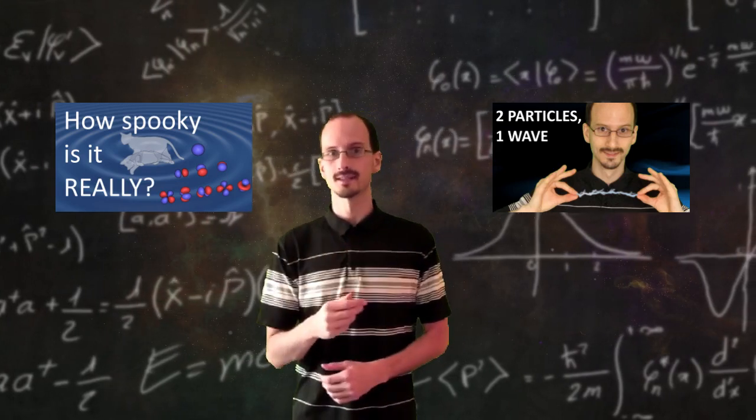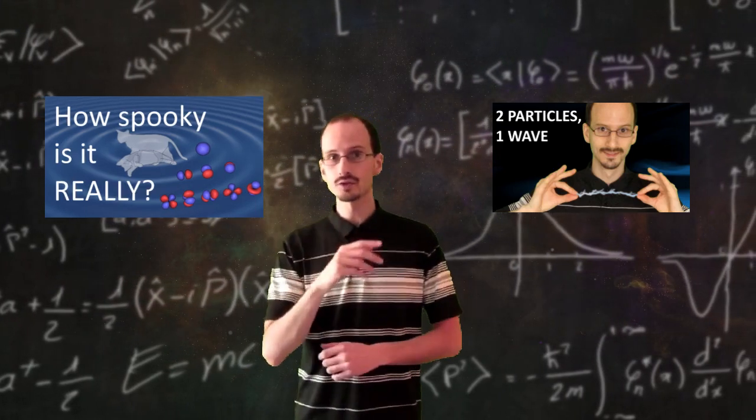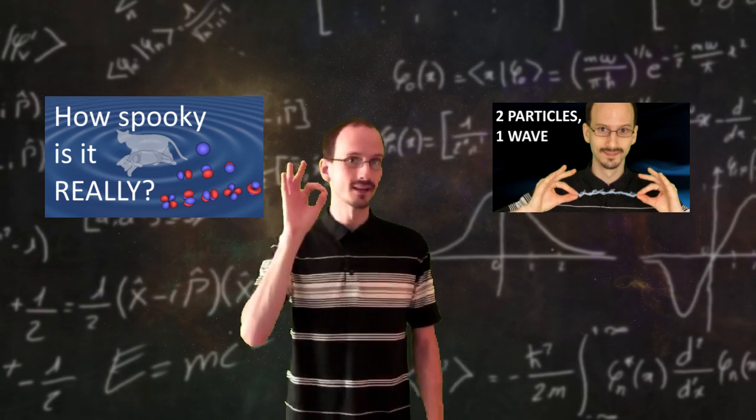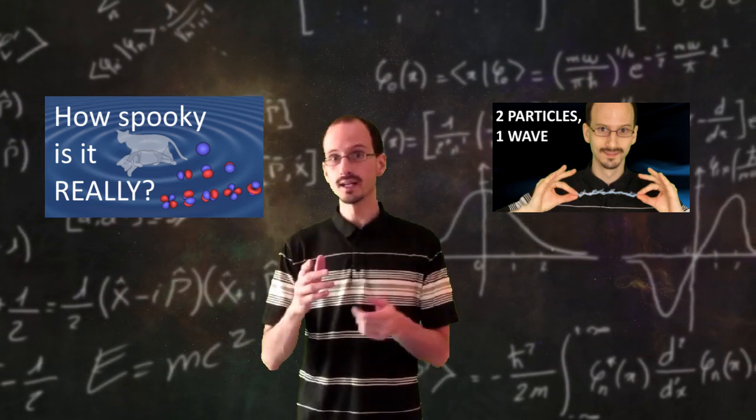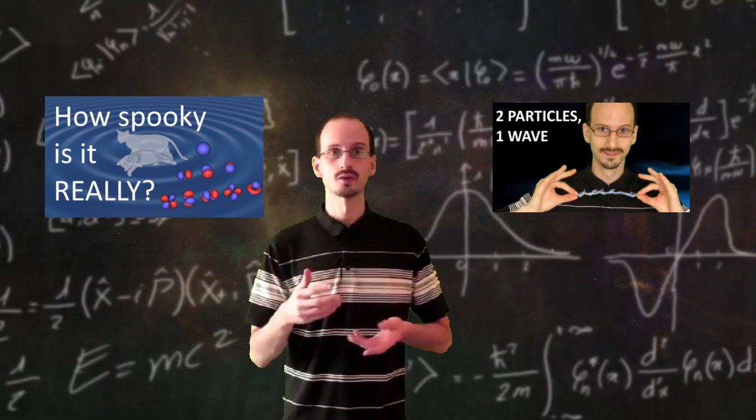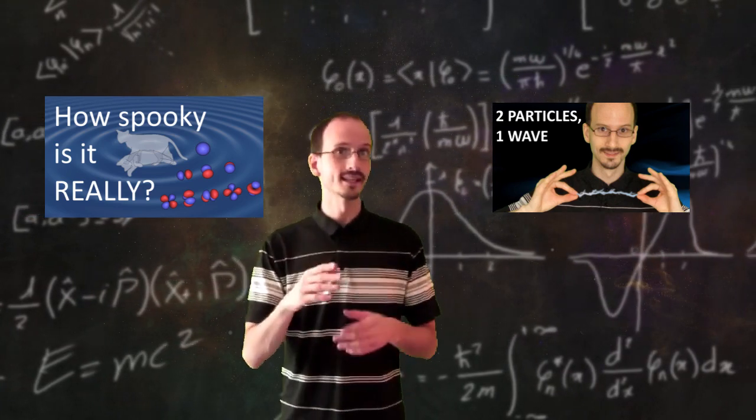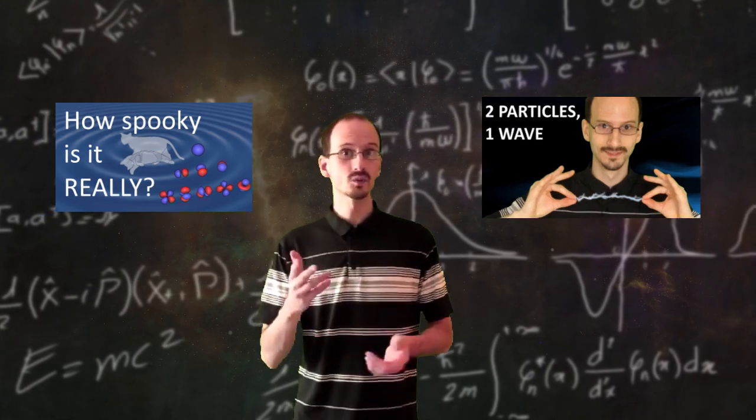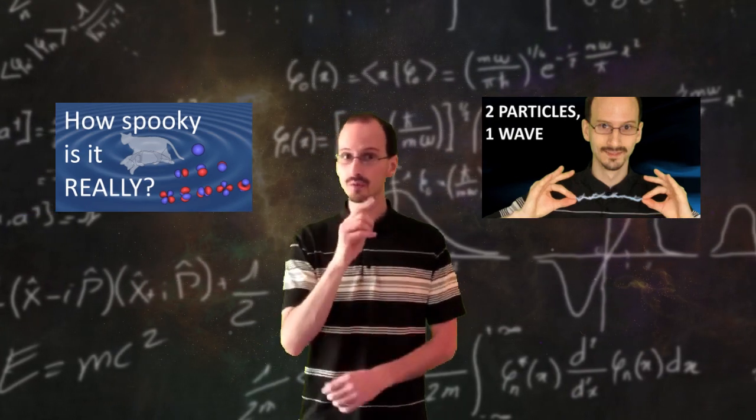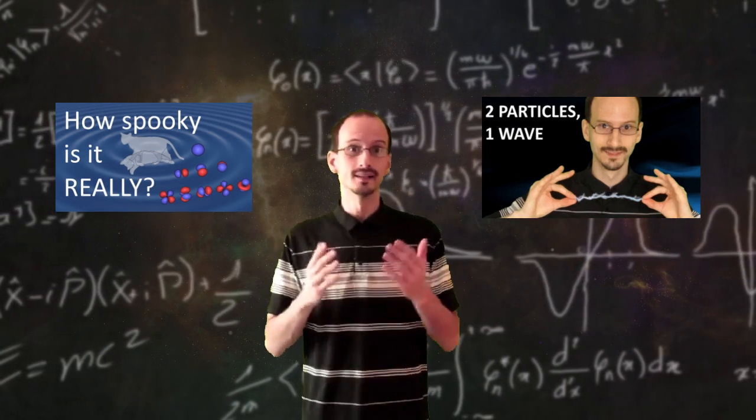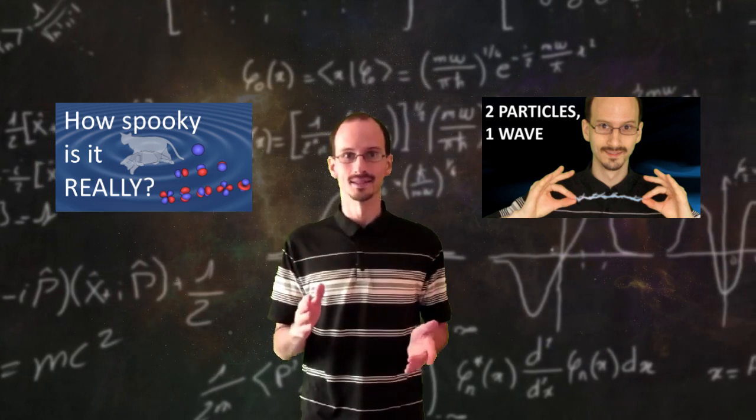We've had two videos now on quantum physics. In the first one, we deconstructed the idea of a particle as an infinitesimal dot and treating it as a wave with one particle's worth of information, which interacts with other particle waves only in discrete amounts. Next, we looked at how waves can have more than one particle's worth of information, leading to a phenomenon called quantum entanglement.